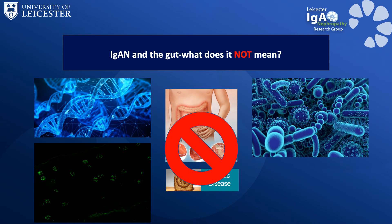It's really important to understand that just because you have IgA nephropathy does not mean you are going to develop a disease of your gut. Equally, if you have inflammatory bowel disease or coeliac disease, this does not mean you are going to develop IgA nephropathy — it is very rare for the two diseases to be linked together. While there is an association when we look at thousands and thousands of people, there isn't a direct causal relationship between bowel disease and IgA nephropathy.